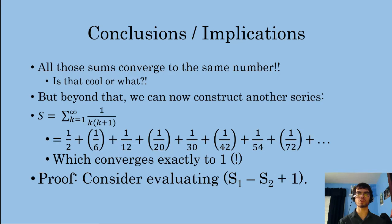But beyond that, we can now construct another series, which is the sigma from k equals one to infinity of one over k times k plus one. And we can write out each of the terms of this, which is to say it's one half plus a sixth plus a twelfth plus a twentieth plus one over thirty plus one over forty-two plus one over fifty-four plus one over seventy-two, et cetera, et cetera. And what you'll notice is that every other term of this new series were basically just interlacing terms from s-one and s-two in order to obtain this. And it in fact converges exactly to one.